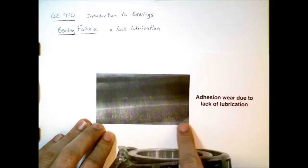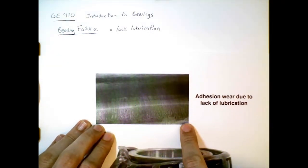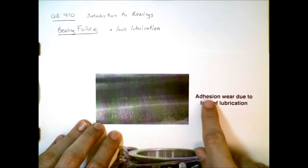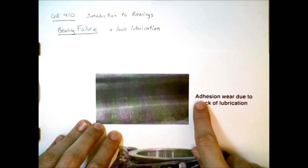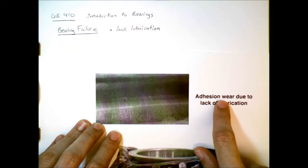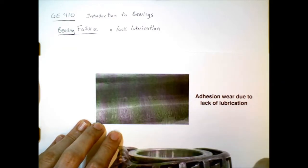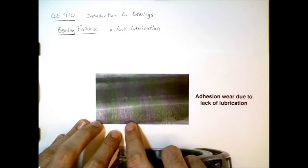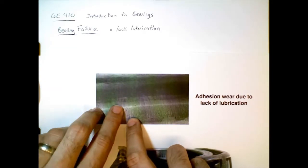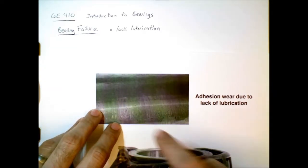What happens when we run out of lubrication is adhesion between the metal surfaces. We get metal on metal contact and then little pieces of the surface due to this adhesion can come off.